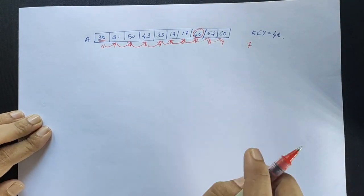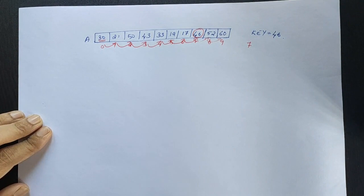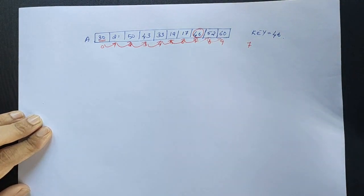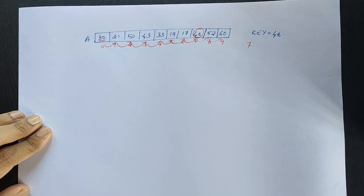Unsuccessful search. N elements are traversed and the value is not found in the list.